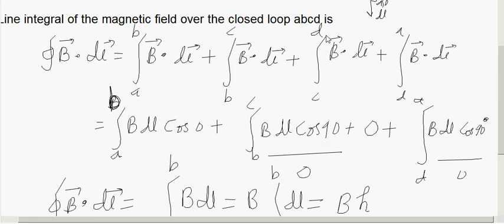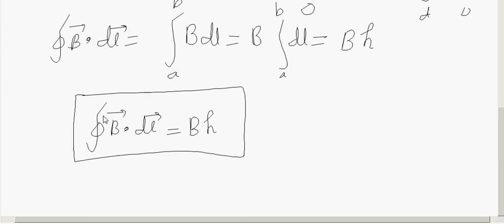Also, CD lies outside the solenoid and the magnetic field is 0. And D to A again it is cos 90 and you got it as 0. So finally, we got line integral of B dot dL as B times H.